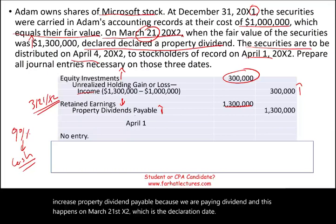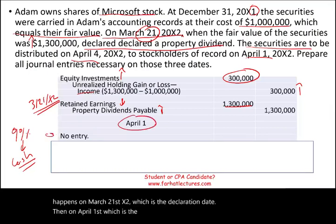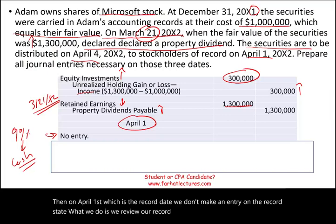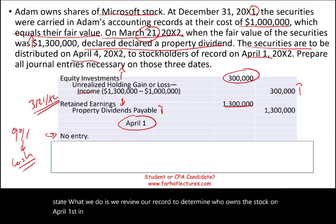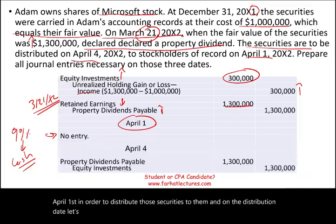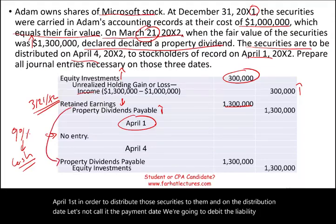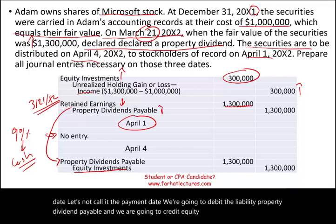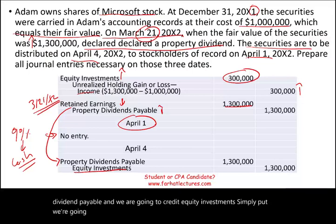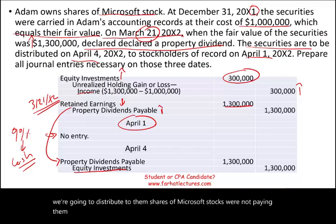On April 1st, which is the record date, we don't make an entry. On the record date, what we do is review our records to determine who owns the stock on April 1st in order to distribute those securities to them. On the distribution date, we debit the liability — Property Dividend Payable — and credit Equity Investments. We distribute shares of Microsoft stock to them, not cash.